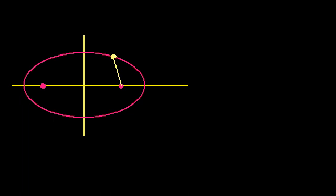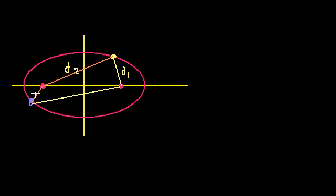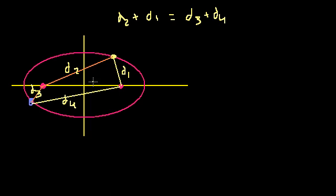If I take that distance and add it to this distance — let's call this d1 and this is d2 — that's going to be equal to a constant number along the whole ellipse. So if I take another point along the ellipse, let's call this d3 and this is d4. The sum of these distances to the foci along this ellipse are going to be a constant. So d2 plus d1 is going to be equal to d3 plus d4, and this would be true wherever you go along the whole ellipse.